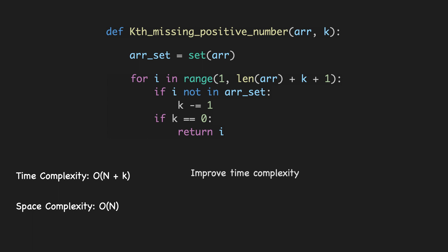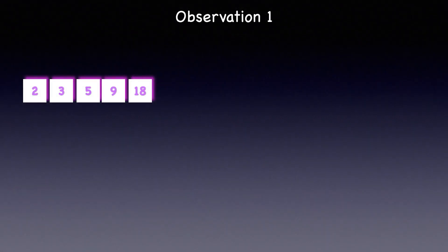Let's explore how we can improve the time complexity. We'll go over a couple of observations first and work through a small challenge that will help us arrive at a solution with improved time. Here is a sorted array as an example and these are the indices of this array. Now, given an element and its index, can we determine how many missing numbers are there before that index?